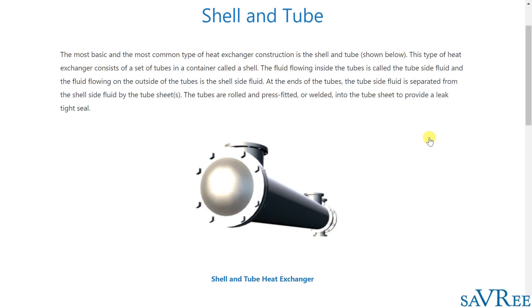Shell and tube. The most basic and the most common type of heat exchanger construction is the shell and tube. This type of heat exchanger consists of a set of tubes in a container called a shell.